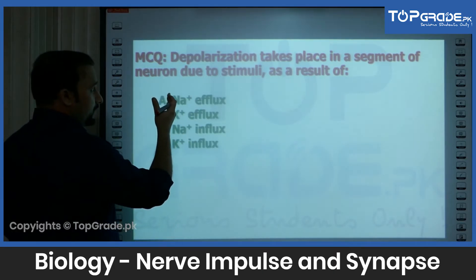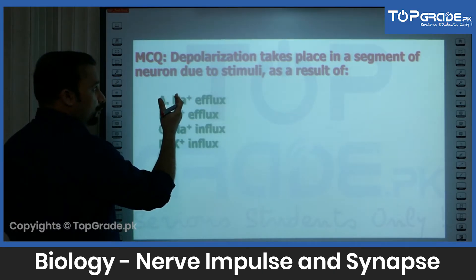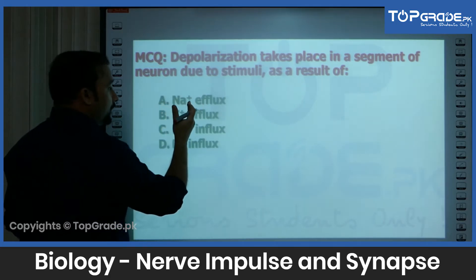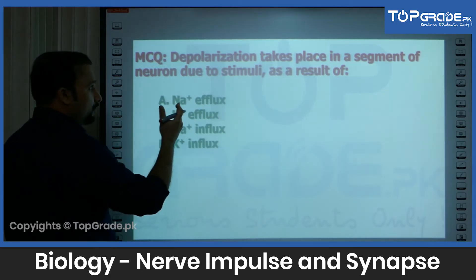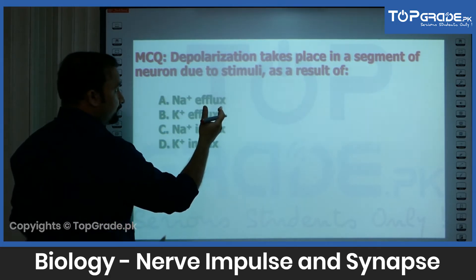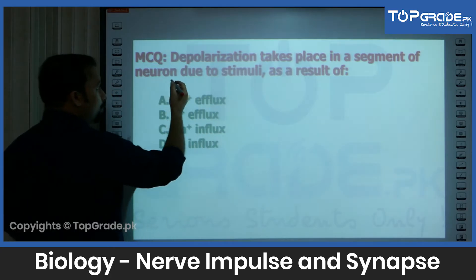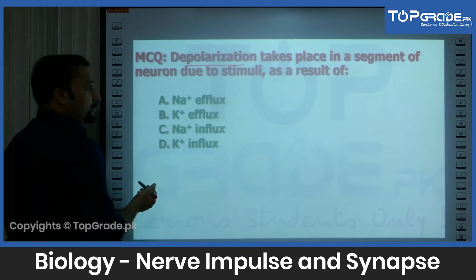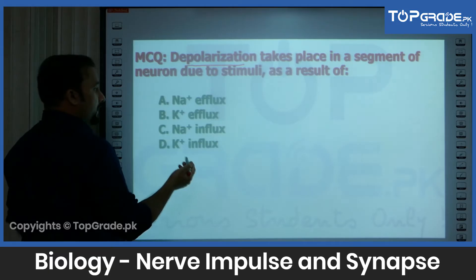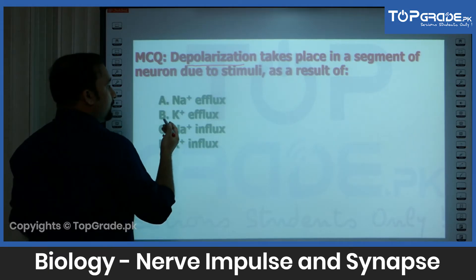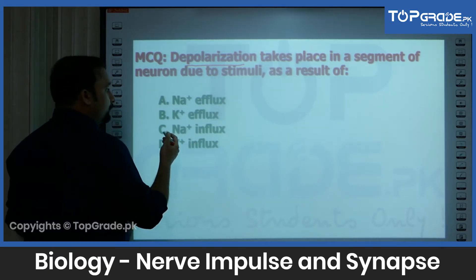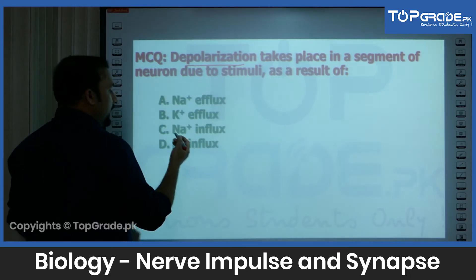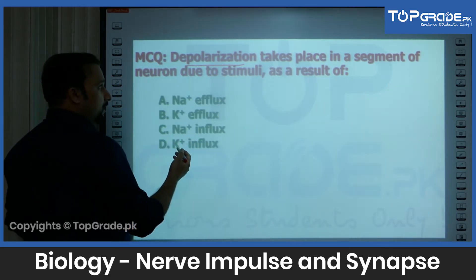The statement is: depolarization takes place in a segment of a neuron due to stimuli — what is the reason? Option A is sodium efflux, B is potassium efflux, C is sodium influx, and D is potassium influx.